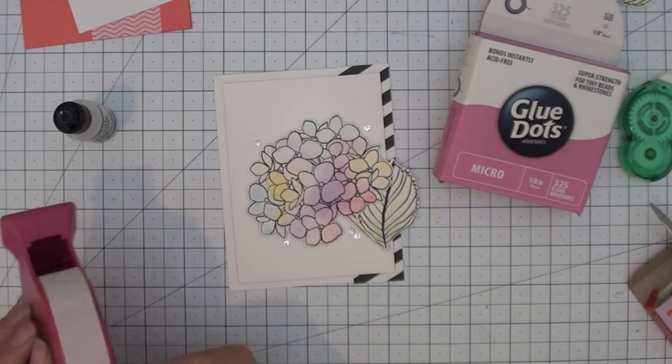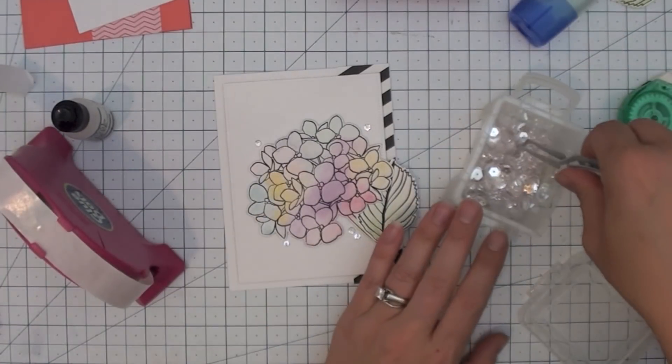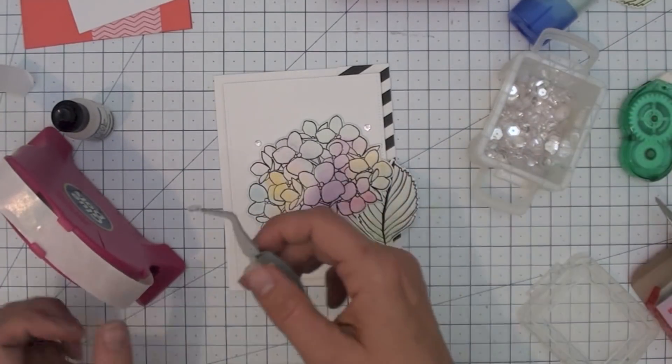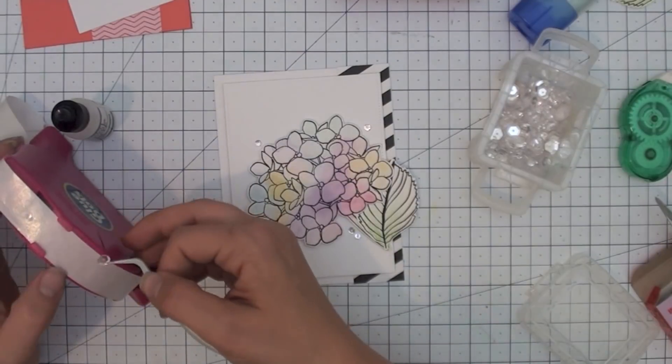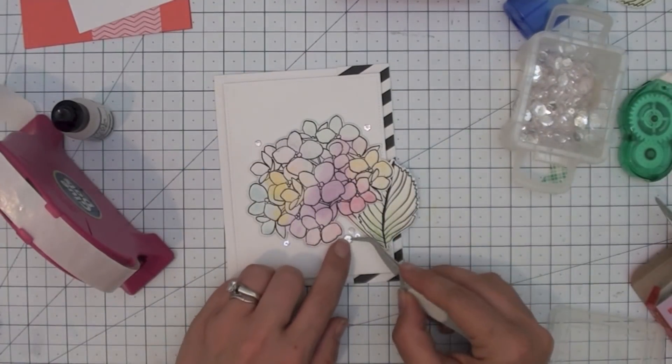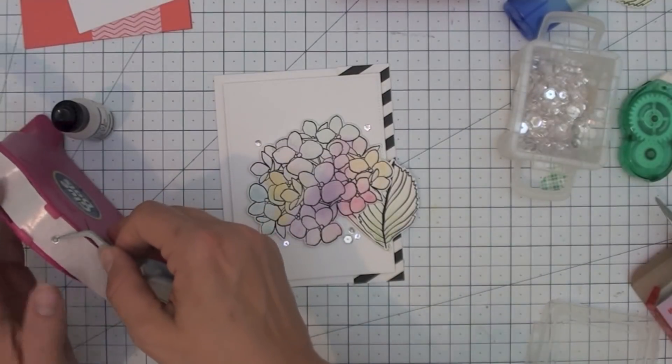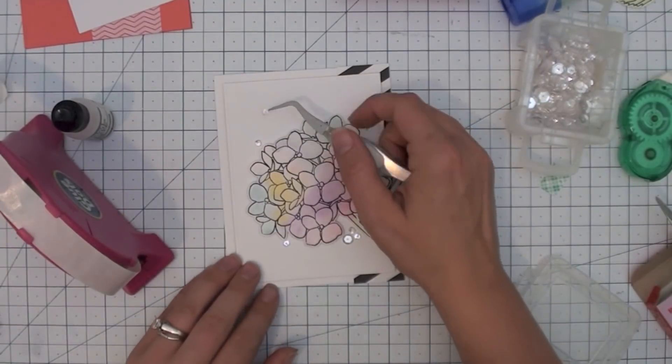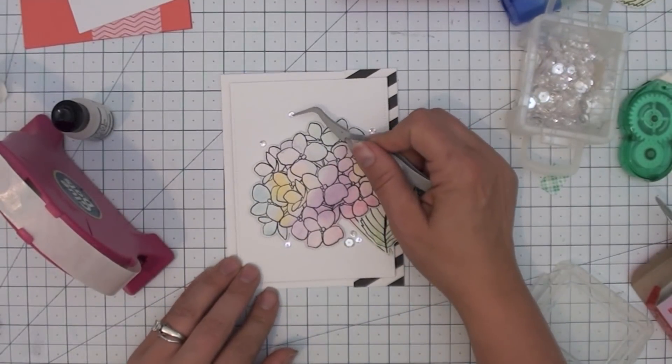The other adhesive that I use quite frequently are glue dots. I love this mini glue dot size, and my little trick here is that I bring my sequin to the glue dot, then I push it down with my thumb, and then I bring it over to my card. So I find that this is yet another type of adhesive that I use quite frequently as well.